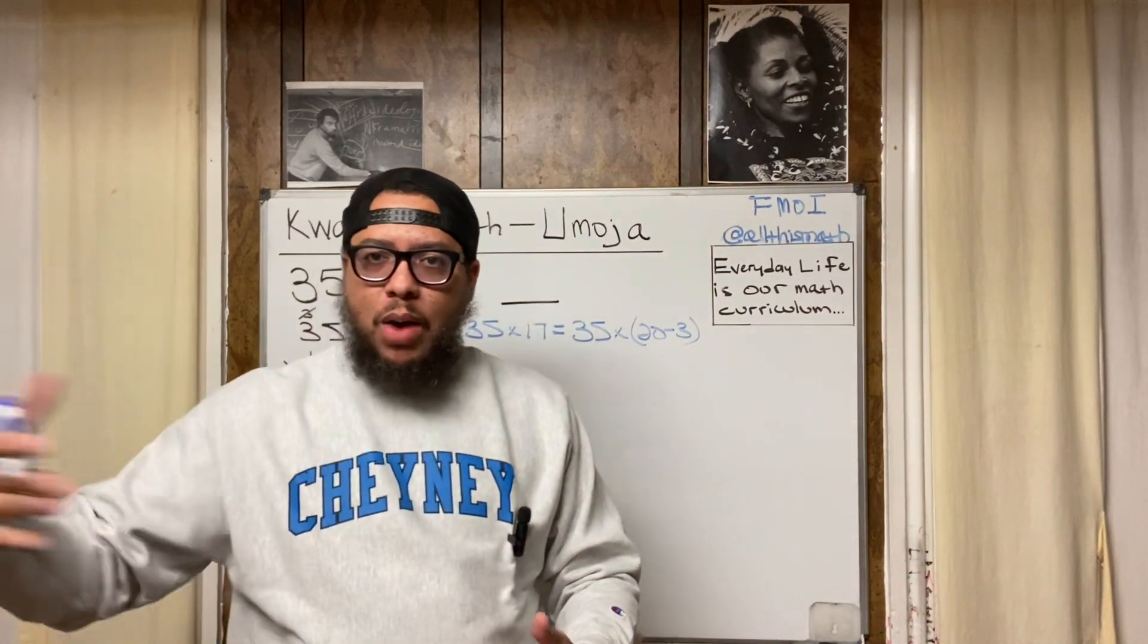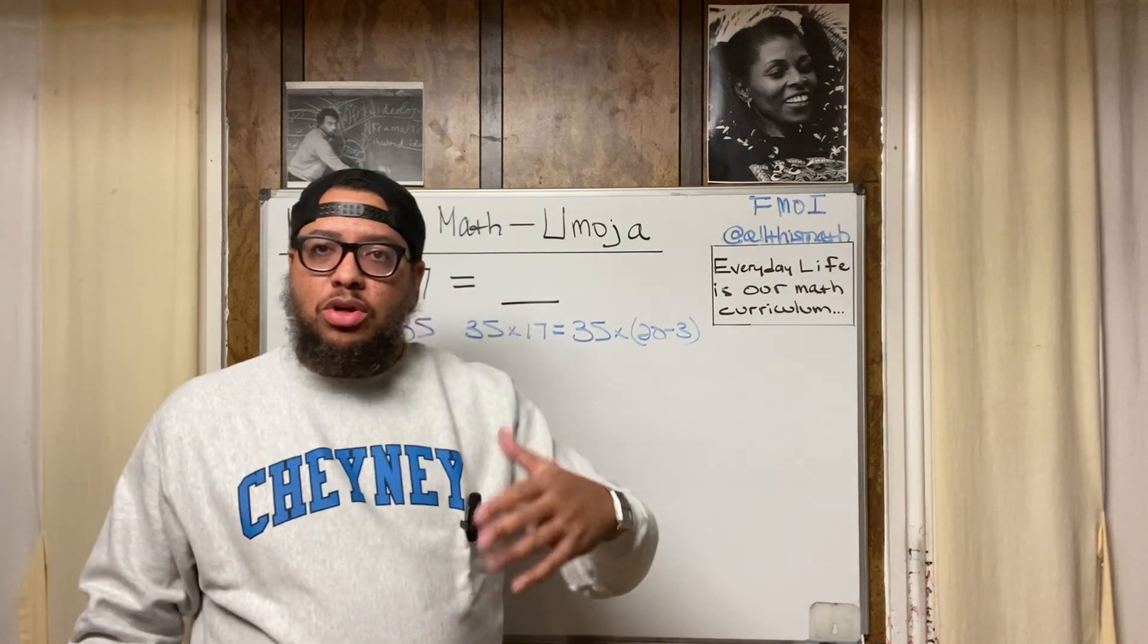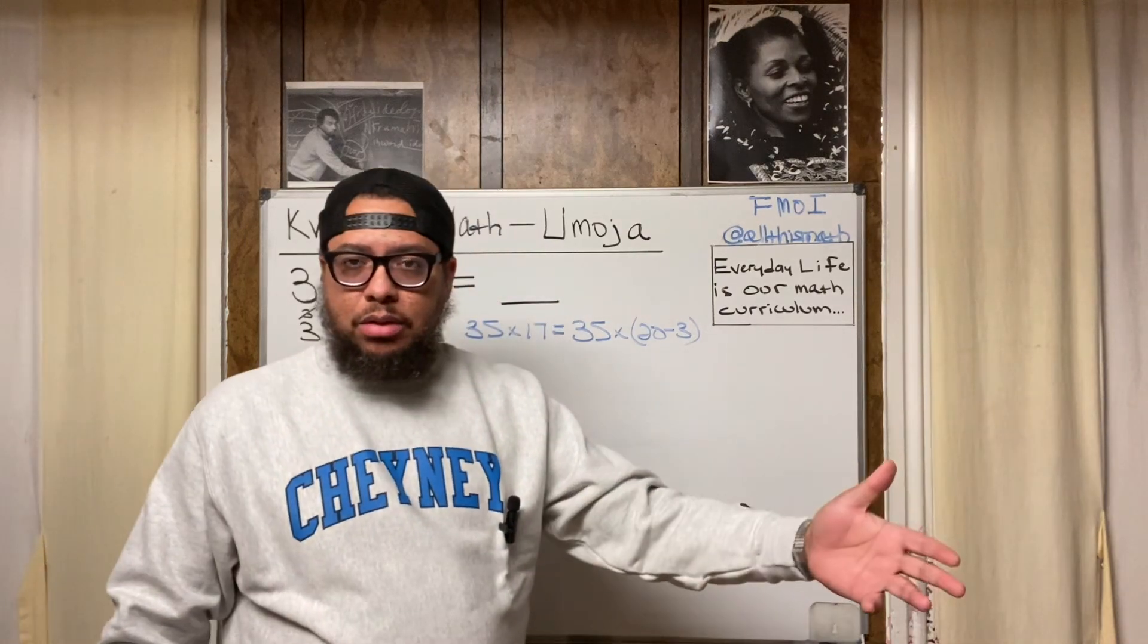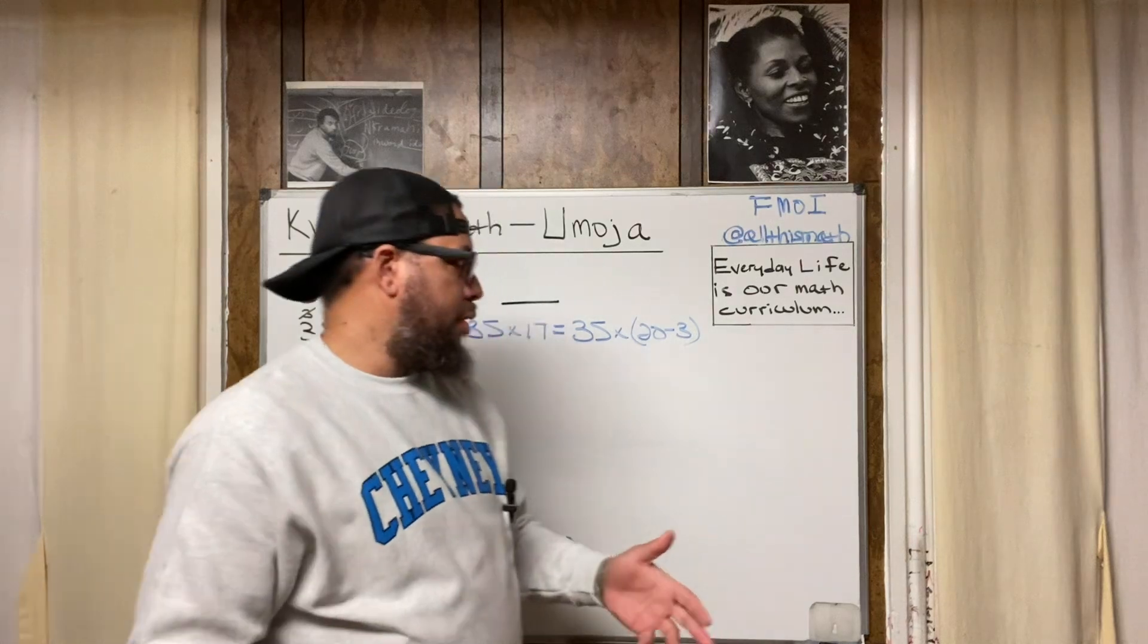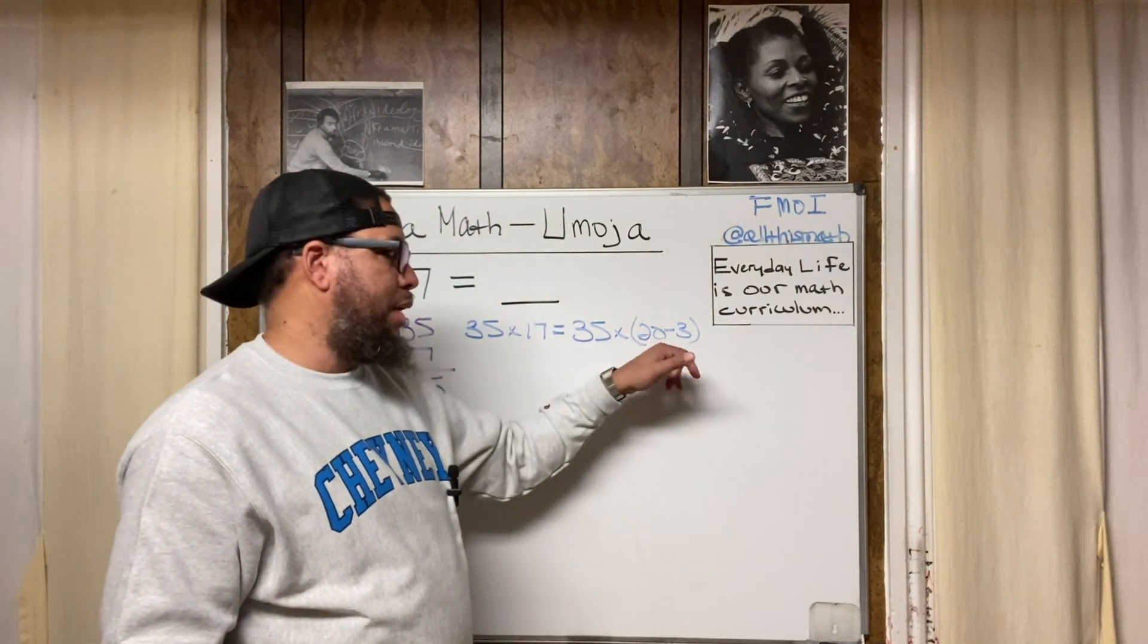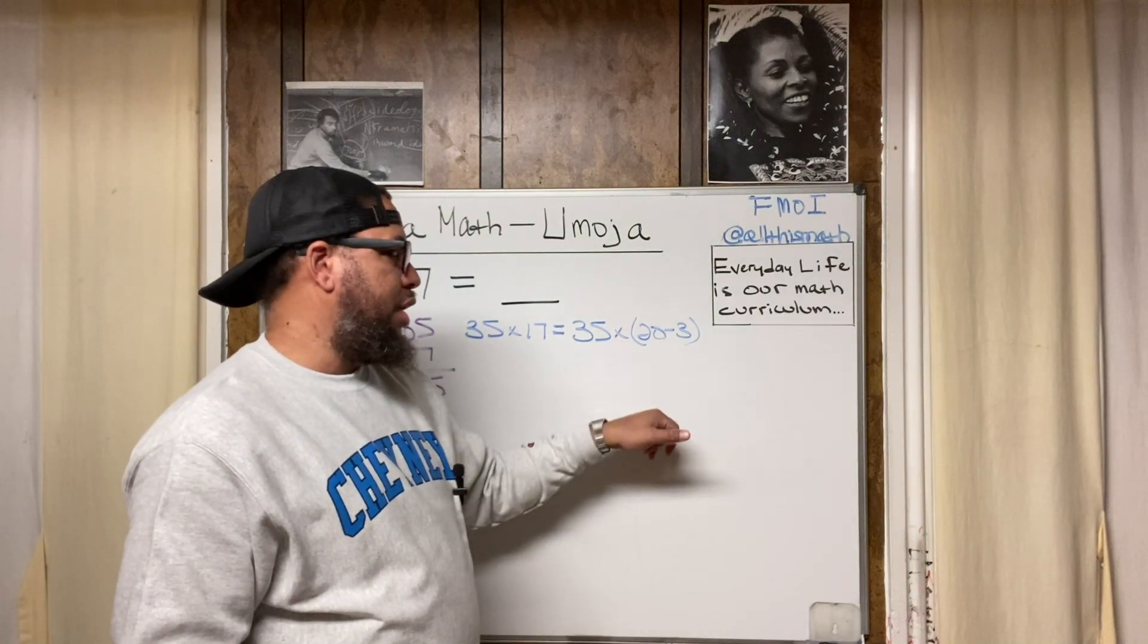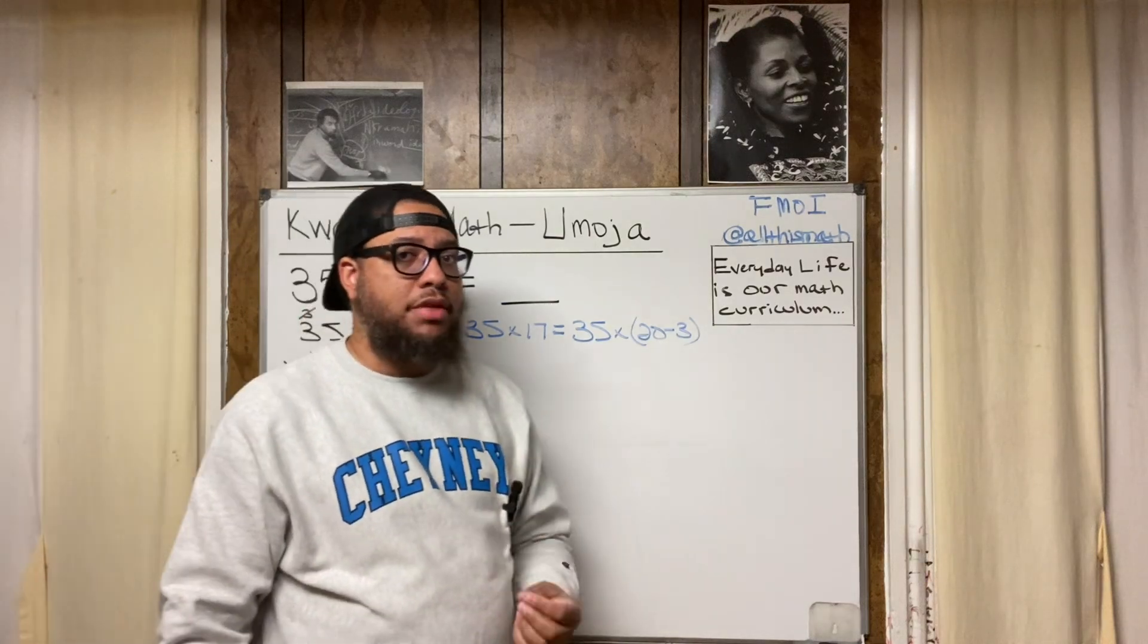I call them happy numbers. Not H-A-P-P-Y though. I call them H-A-P-I happy. Like happy like what we used to call the Nile River back in the day. What our ancestors used to call the Nile River back in ancient Kemet or modern day Egypt. The Hapi river is the Nile River. And it's happy because it makes the math easier. When you multiply by numbers that end in zero, the math is easier. Because I can actually pretend like that zero is not even there. And I could just do 35 times 2. 35 times 2 is 70.